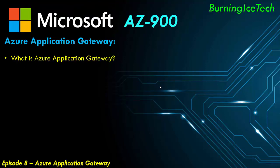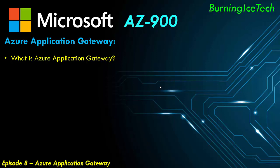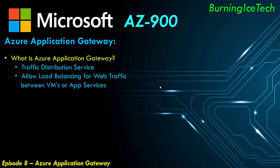So what exactly is the Azure application gateway? If you guys have watched episode six of this series, which was Azure's load balancer, this is actually very much the same as the Azure load balancer. It allows you to distribute traffic — it's a traffic distribution service — and also allows load balancing for web traffic between virtual machines or app services.